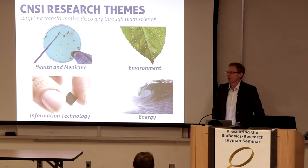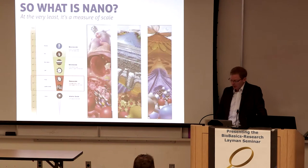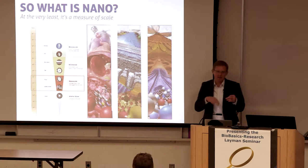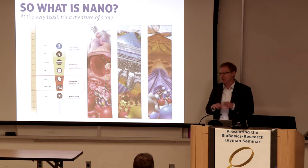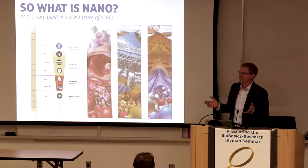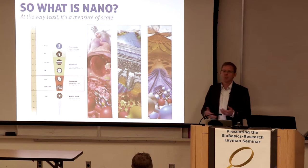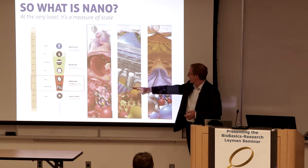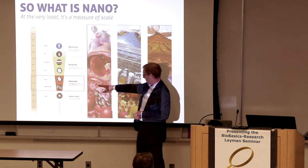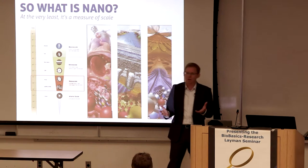Getting back to what nano is: at its most basic, nano is a Greek word that means dwarf — it means small. So at a minimum, nano means a metric of scale. We're talking about biological systems, physical systems, materials and devices that are billions of times smaller than the objects we generally interact with in everyday life. Rather than try to convey analogies like comparing the earth to a soccer ball, just remember: these are the smallest scales of things — the atomic and molecular scale.